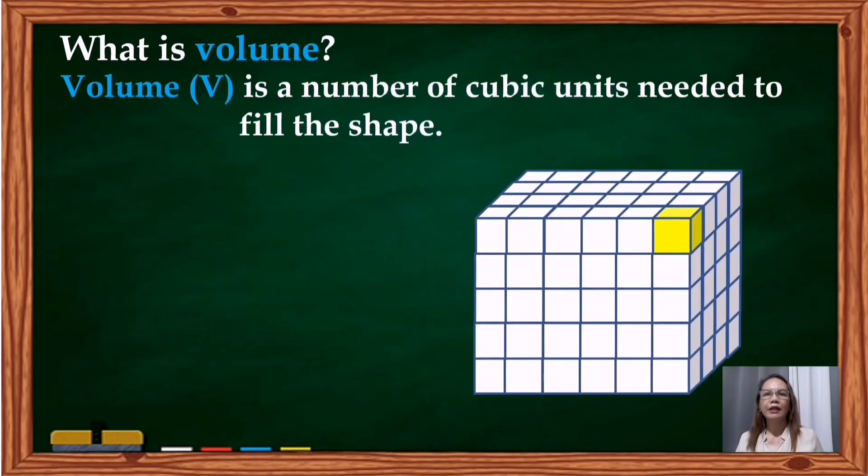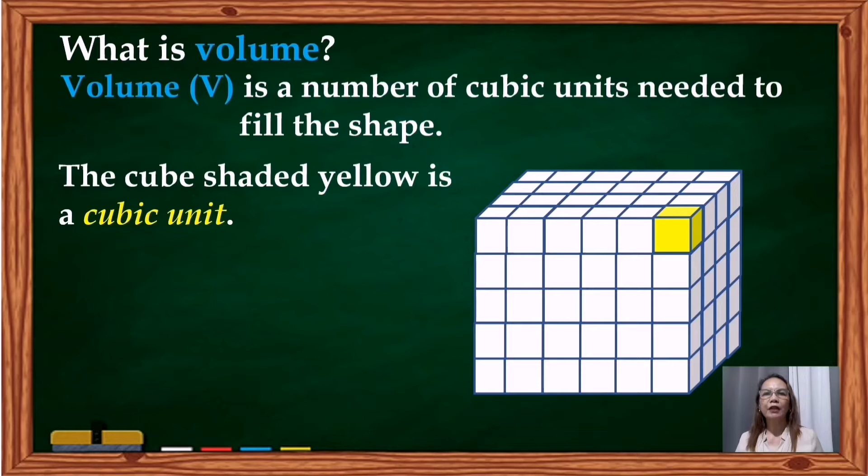Volume is measured by how many cubic units it would take to fill a given space. As you can see in our illustration, the cube shaded yellow is a cubic unit. The number of cubic units it takes to fill a defined space is what we call volume.